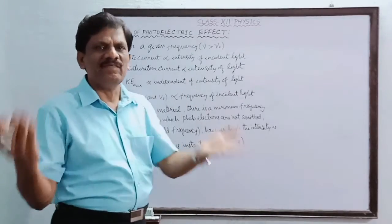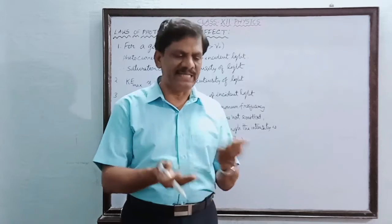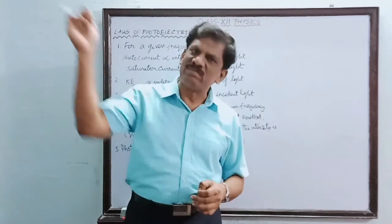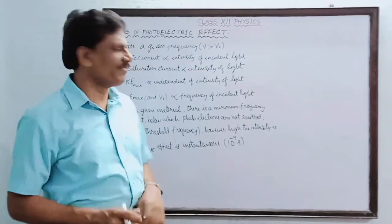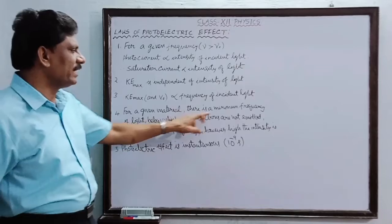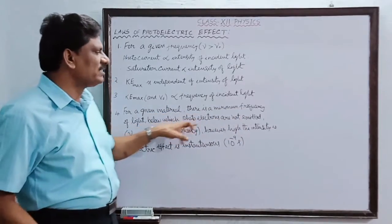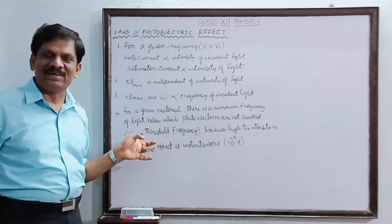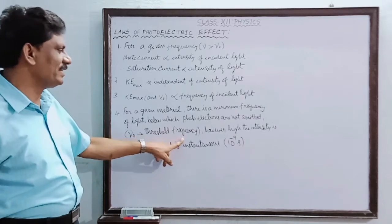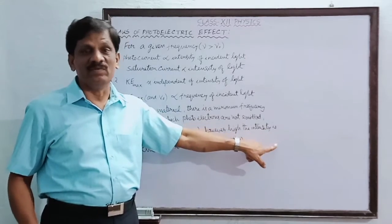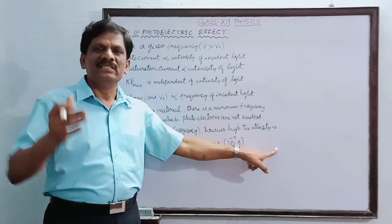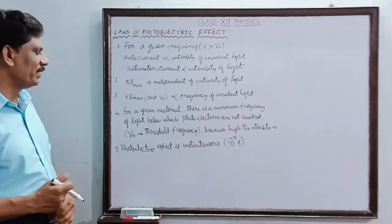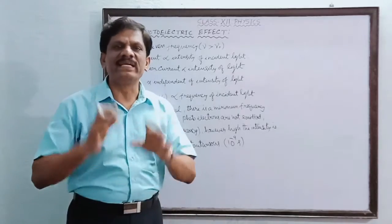The fourth law: for any given photoelectric surface — such as cesium, iron, platinum, or tungsten — there is a certain minimum frequency of incident light below which the photoelectric effect does not take place. For a given material, this minimum frequency is denoted by ν₀, called the threshold frequency. However high the intensity is, if the frequency is less than the threshold frequency, no emission of electrons will take place.